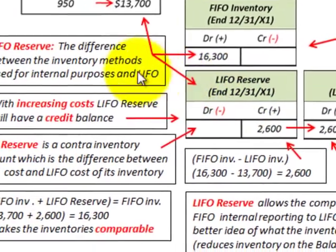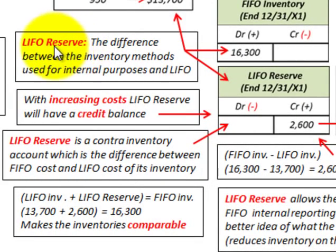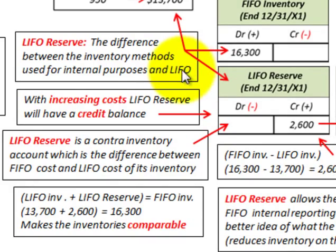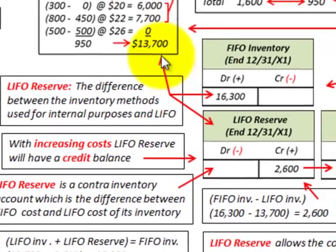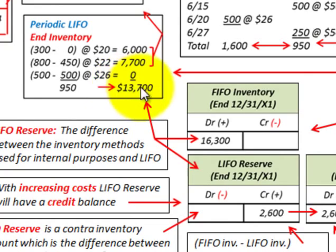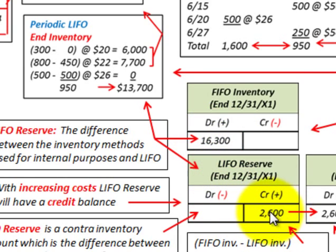Going back again: this LIFO reserve is the difference between the inventory methods used for internal reporting purposes — FIFO — and our LIFO for external reporting purposes. Our LIFO ending inventory was $13,700 versus a FIFO of $16,300, and that difference was $2,600.